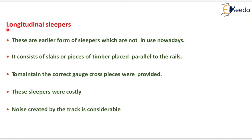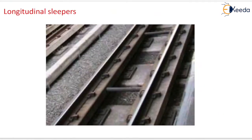Longitudinal sleepers are an earlier form of sleepers no longer in use. They consist of slabs or pieces of timber placed parallel to the rails. To maintain the correct gauge, cross pieces were provided. These sleepers were costly and the noise created by the track was considerable.